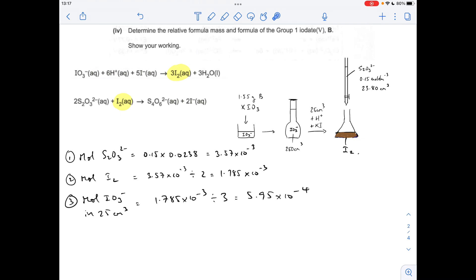The moles of IO₃⁻ in 25 cm³ must be that many. Therefore the moles of IO₃⁻ in the 250 cm³ flask must be 10 times that: 5.95 × 10⁻³. Remember, they came from that, which comes from that, so that's also the moles of XIO₃ in the 1.55 gram sample.